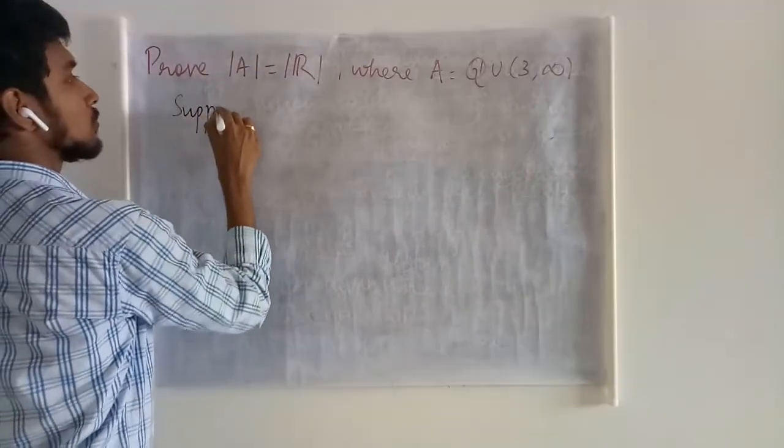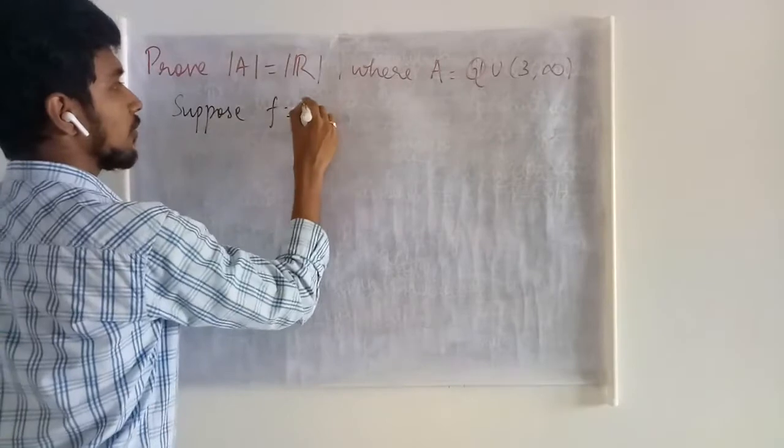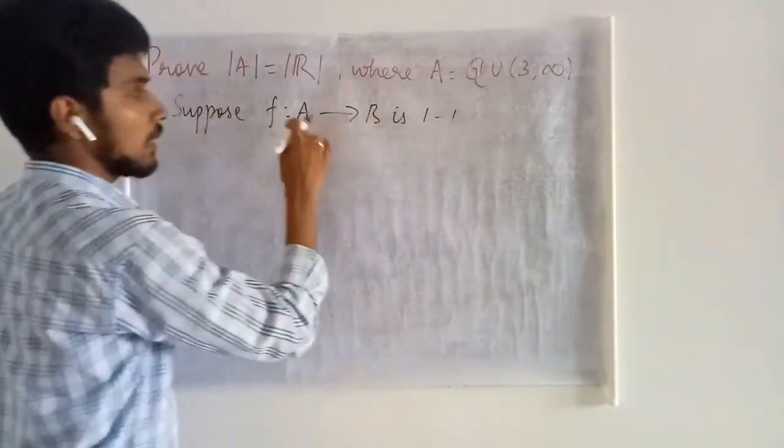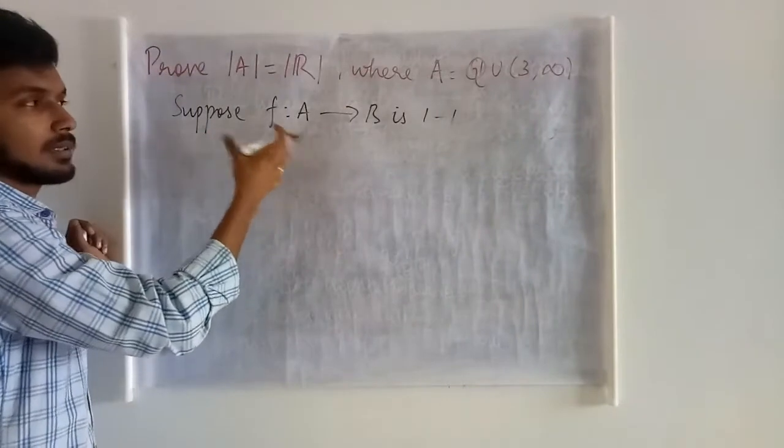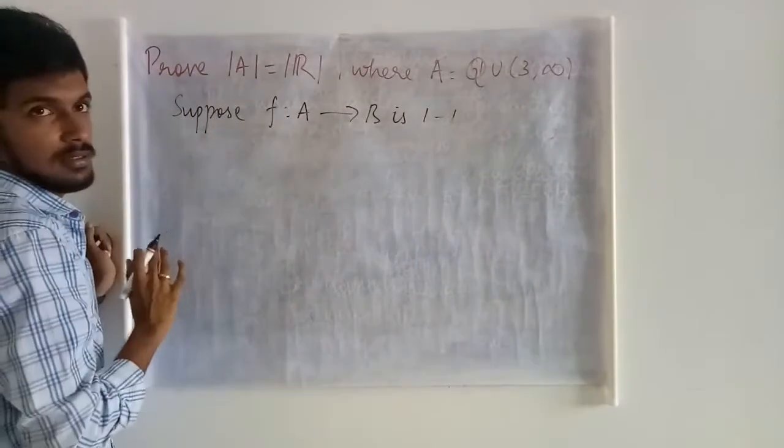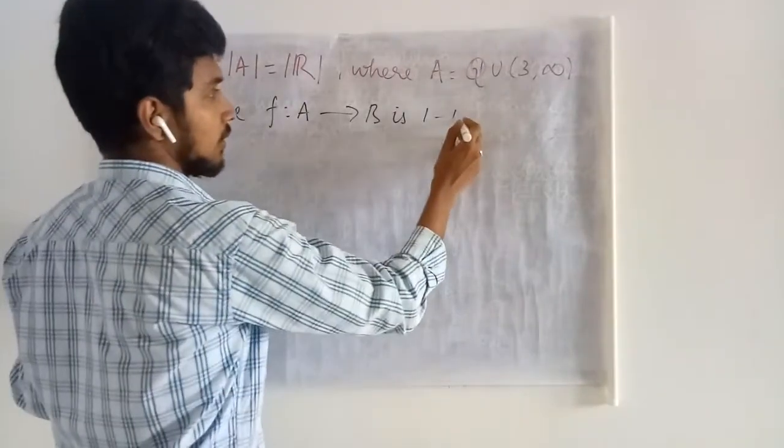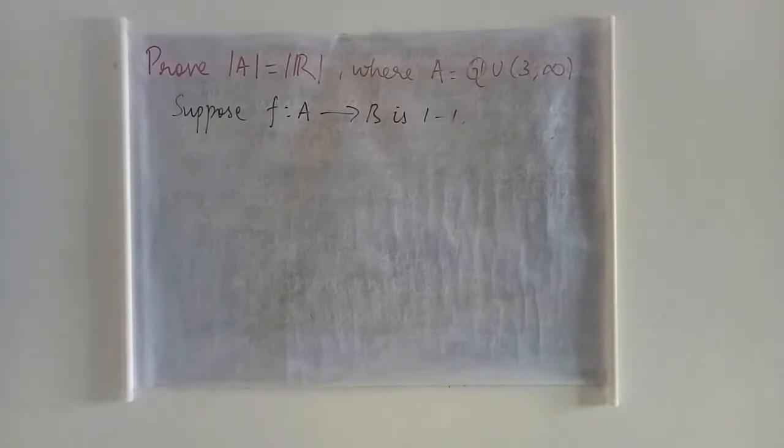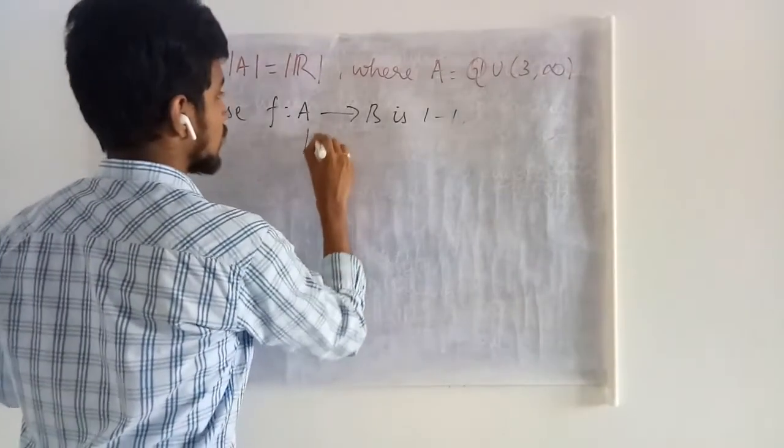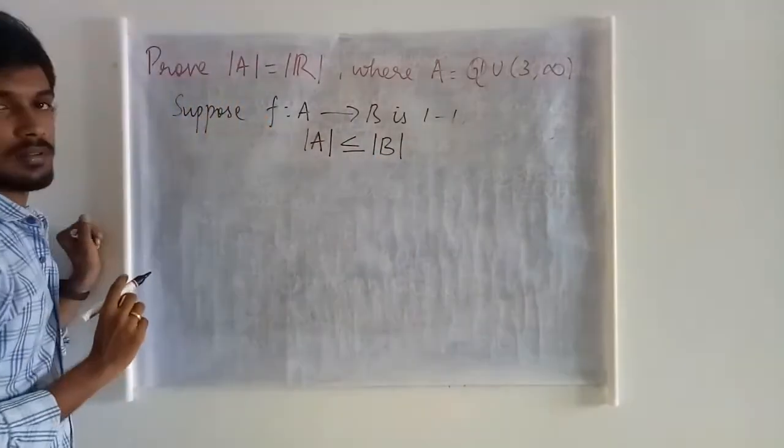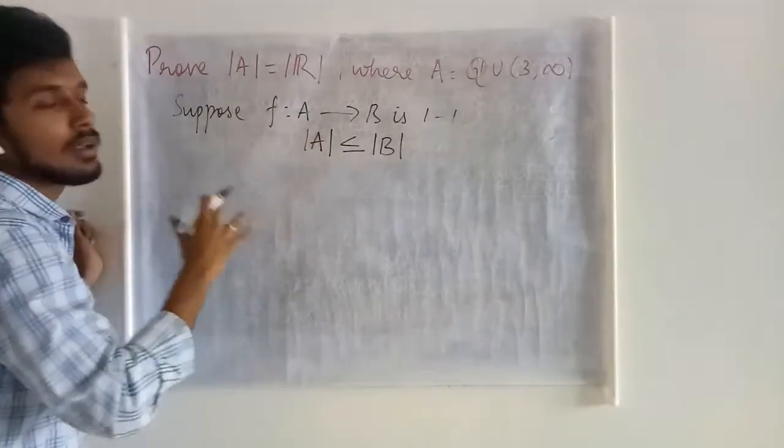Suppose F from A to B is 1-1. Here, I am taking two random sets and I am having something like this. If this is so, what I can say is that we will have this result: cardinality of A is less than or equals cardinality of B, if the mapping is 1-1.